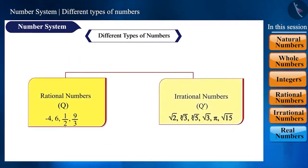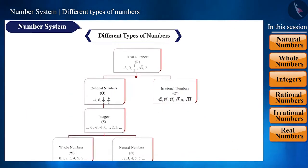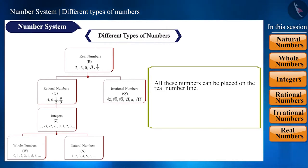The rational and irrational numbers combine to form real numbers which are represented by the symbol R. That is, under real numbers, there are only two types of numbers, rational and irrational. Since all these numbers can be represented on the number line, we call them real numbers and that number line is called the real number line.